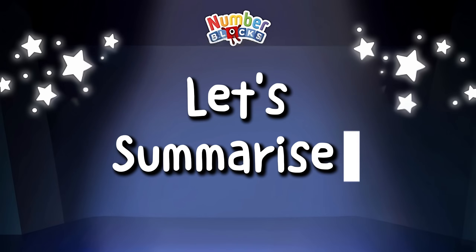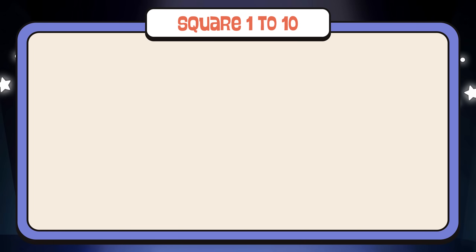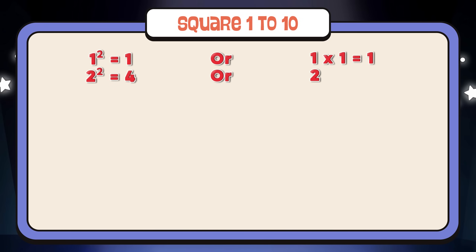Now let's summarize squares one to ten. One square is equal to one, or one times one is equal to one. Two square is equal to four, or two times two is equal to four.